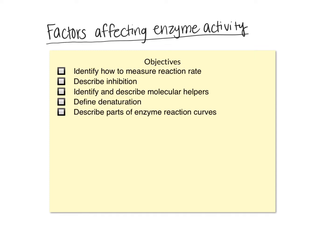Hi, everyone. In this video, I'm going to be talking about factors affecting enzyme activity. We're going to identify how to measure reaction rates, describe what inhibition is, identify and describe molecular helpers for enzymes, define denaturation, and describe the parts of an enzyme reaction curve. In this first part of the video, we're going to talk about factors that affect enzyme activity in a temporary situation. In the second part, we'll talk about permanent changes to enzyme activity.